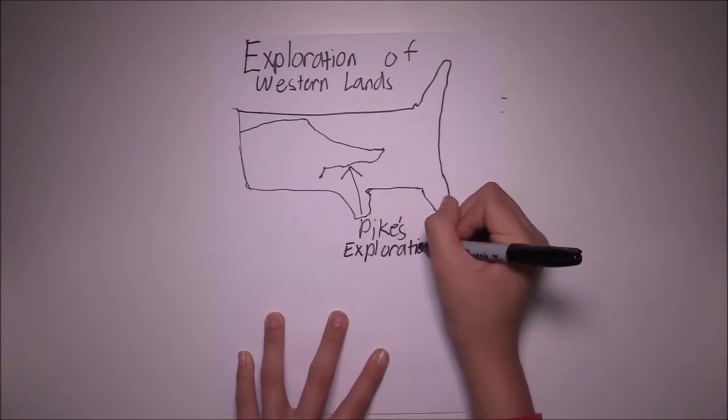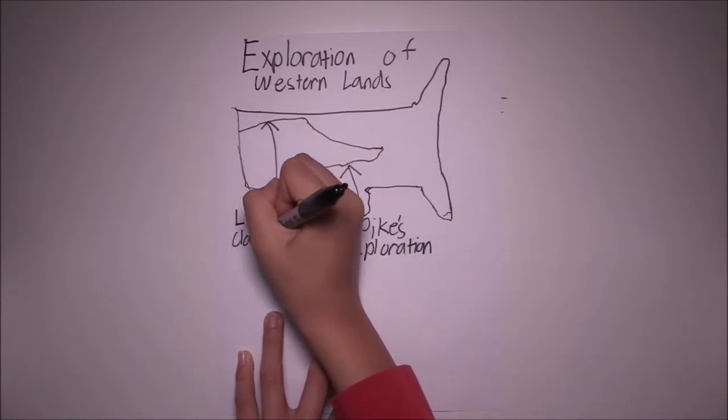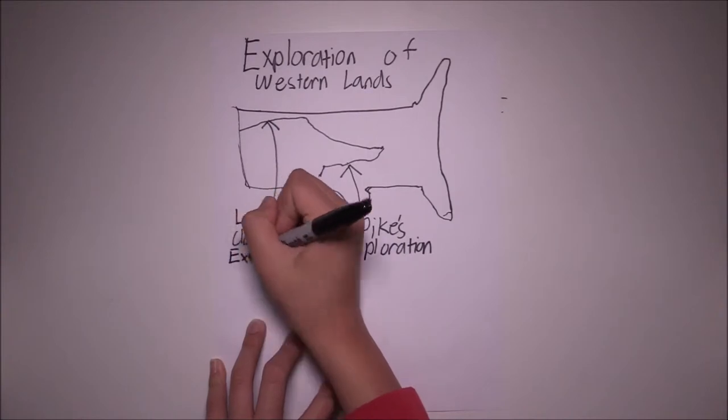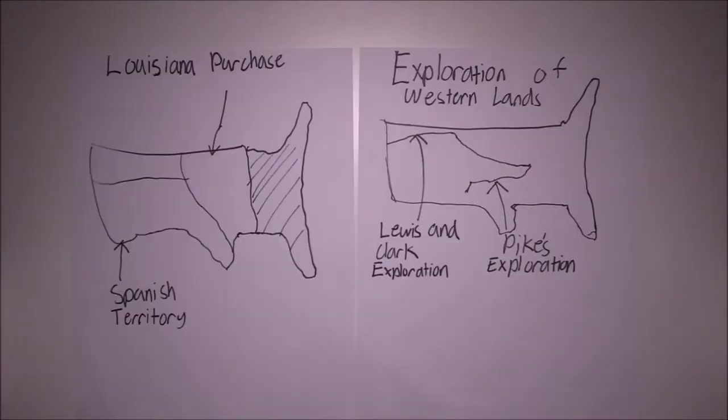The next major expedition was Pike's expedition. Ordered to find the starting point of the Red River, he walked into Spanish territory and was caught. When released, he gave Americans their first description of the Southwest. That's it for section 2. Moving on to section 3.